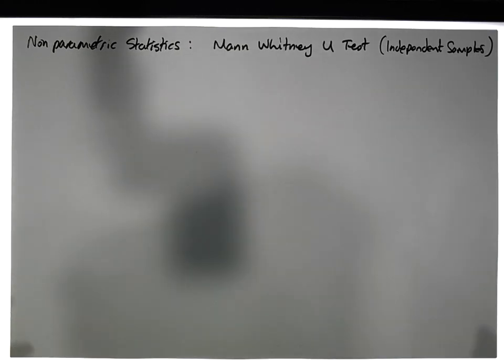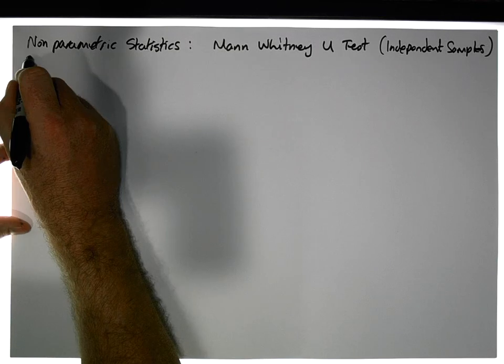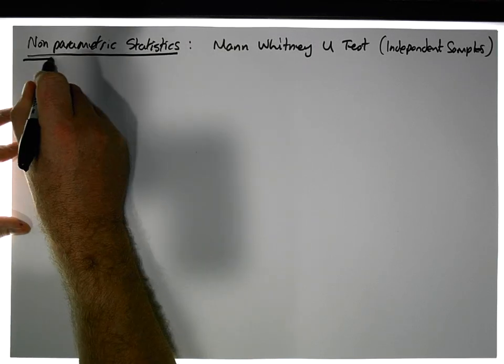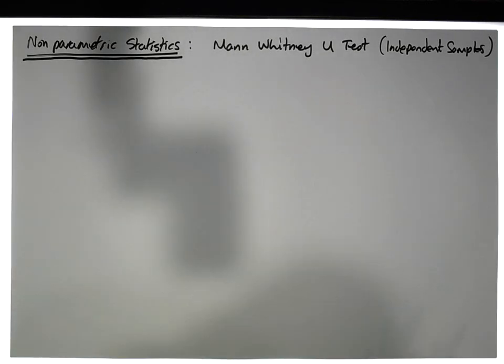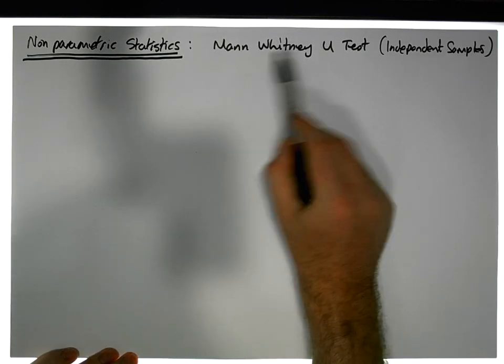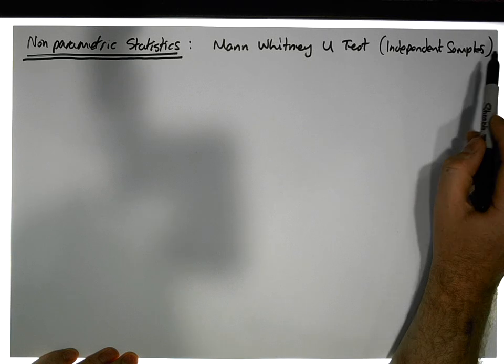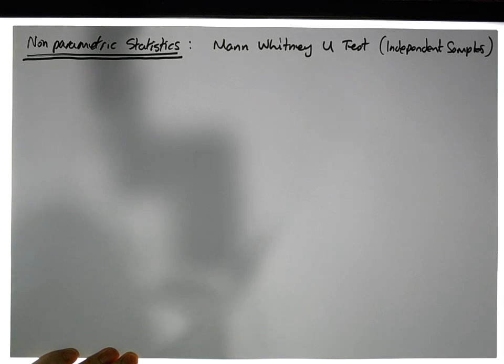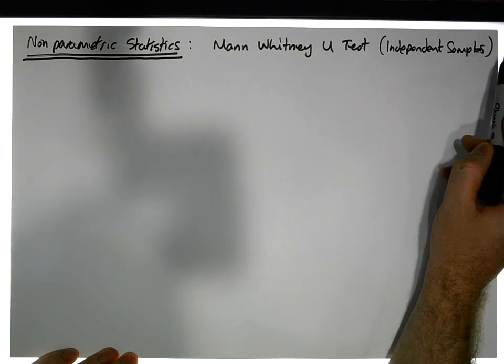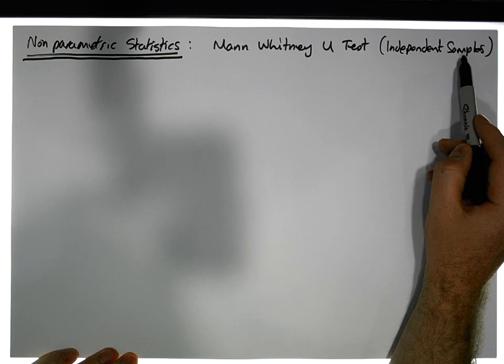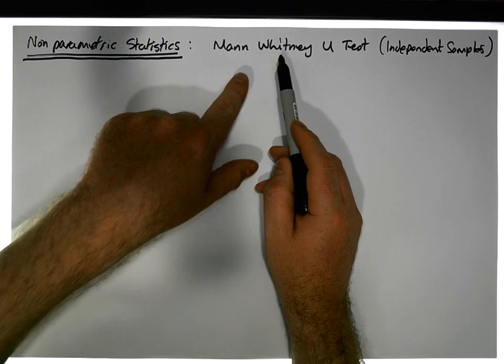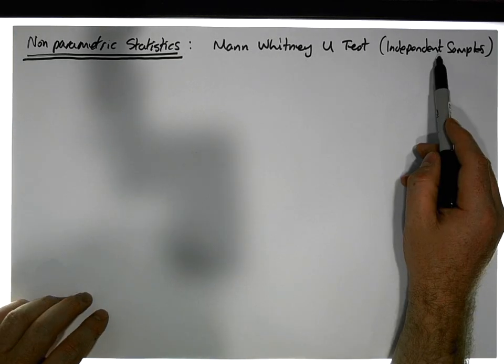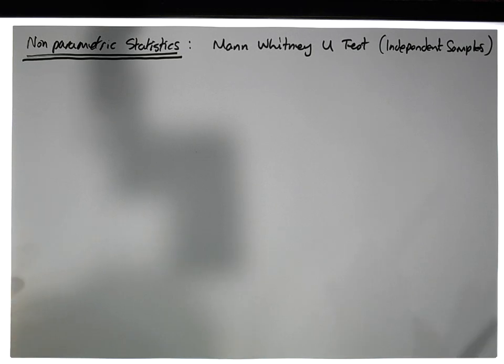In this short video, another video in our series dealing with non-parametric statistics, we're going to concentrate on how to undertake a Mann-Whitney U test, which is a test of the difference between a particular property of two independent groups. This is equivalent to the independent samples t-test from a non-parametric perspective. The independent samples t-test being a parametric test of the difference between two independent groups, the Mann-Whitney being the non-parametric version. We lean on the Mann-Whitney U test when we've violated some of the assumptions associated with the parametric t-test.